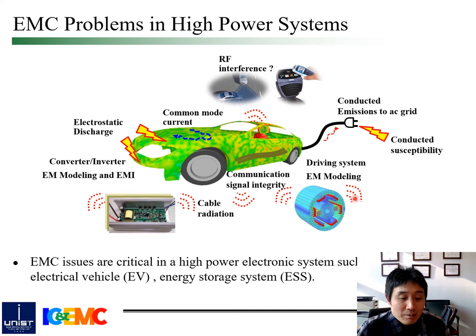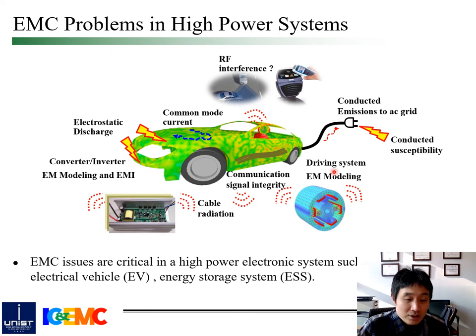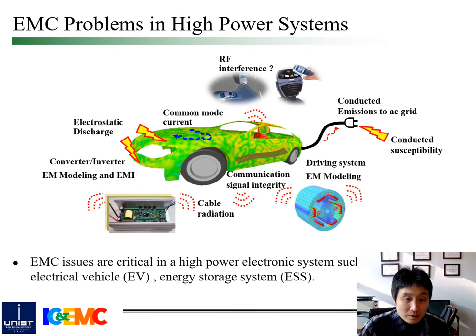As shown in this figure, electromagnetic compatibility issues become more critical in high-power electronic systems, such as home appliances, electric vehicles, and energy storage systems. The problems include conducted emission to AC grid, conducted susceptibility, modeling of driving systems, modeling of converter or inverter, cable radiation, communication signal integrity, RF interference, and so on.